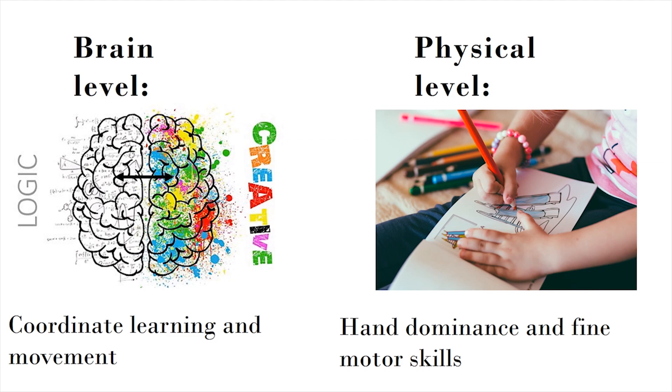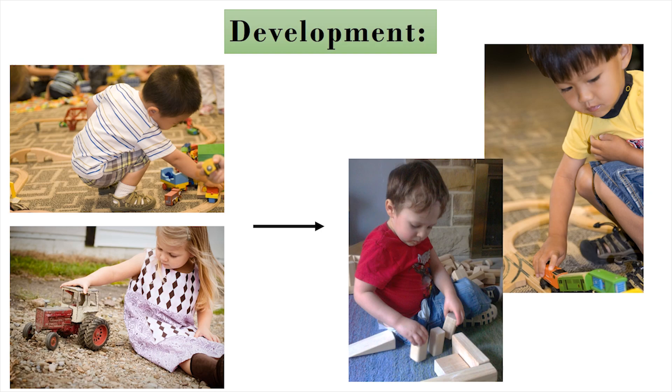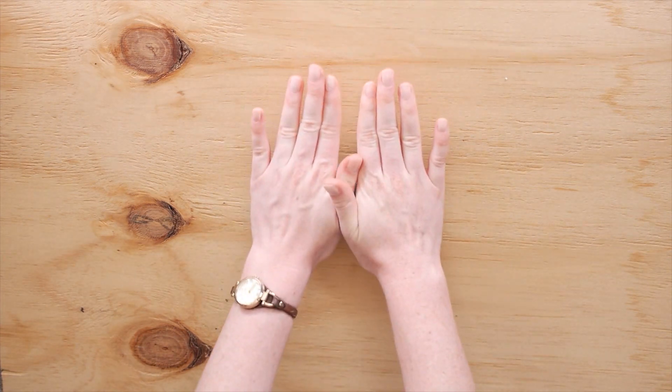Babies and toddlers may use both hands equally initially while picking up or interacting with an object with whichever hand is closest. However, by three to four years of age, a child should typically have mastered the skill of spontaneously crossing over the midline.